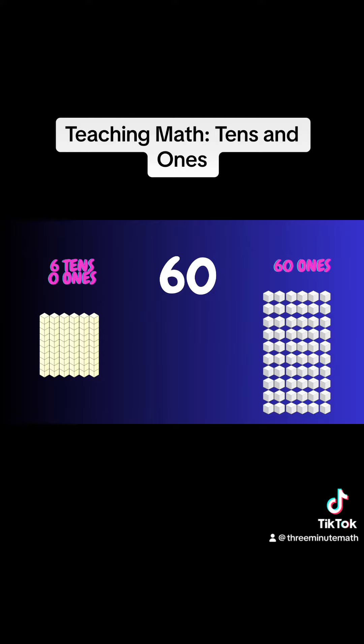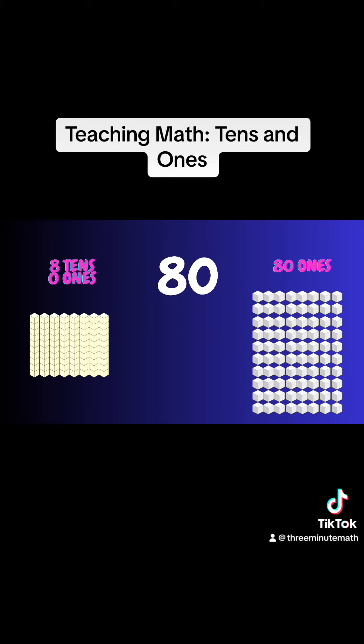Sixty is six tens and zero ones or sixty ones. Seventy is seven tens and zero ones or seventy ones. Eighty is eight tens and zero ones or eighty ones. Ninety is nine tens and zero ones or ninety ones.